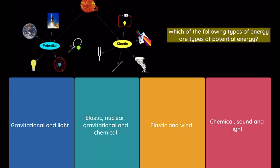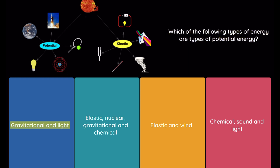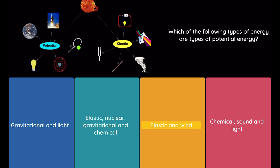Question: Which of the following types of energy are types of potential energy? Option 1: gravitational and light. Option 2: elastic, nuclear, gravitational, and chemical. Option 3: elastic and wind. Option 4: chemical, sound, and light.